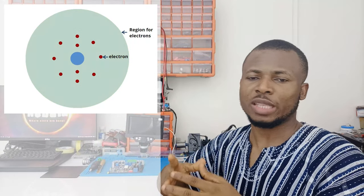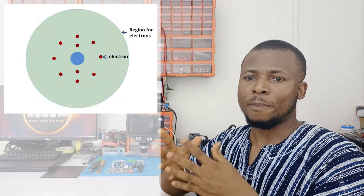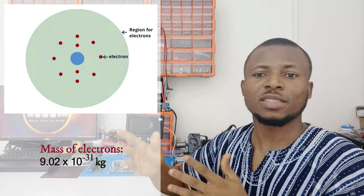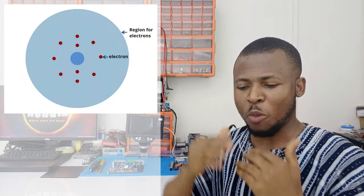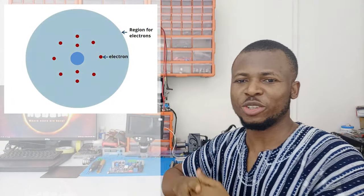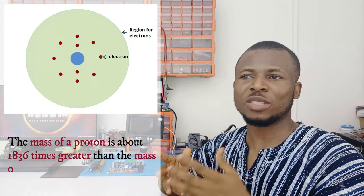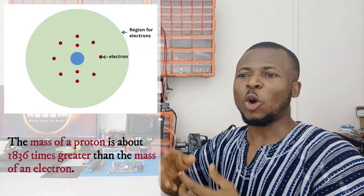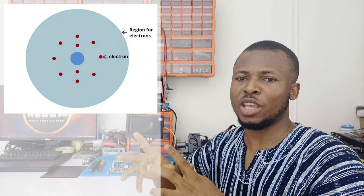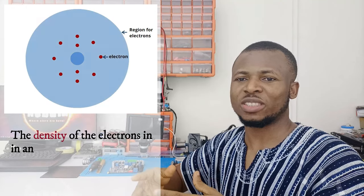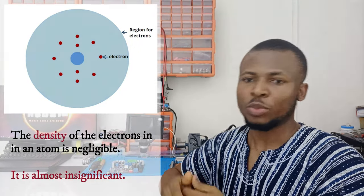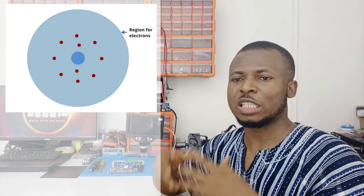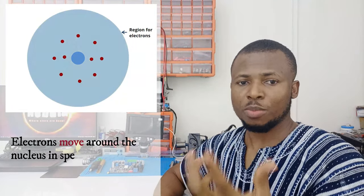Like protons and neutrons, the electron also has a mass, and the mass of the electron is typically about 9.109 times 10 to the power minus 31 kilograms. Compared to the mass of a proton or a neutron, the mass of a proton is about 1,836 times greater than the mass of the electron. Hence, coupled with the larger volume they occupy, the density of the electrons is negligible. In the atom, the electrons move around the nucleus in specific paths that we call shells — more on shells later.